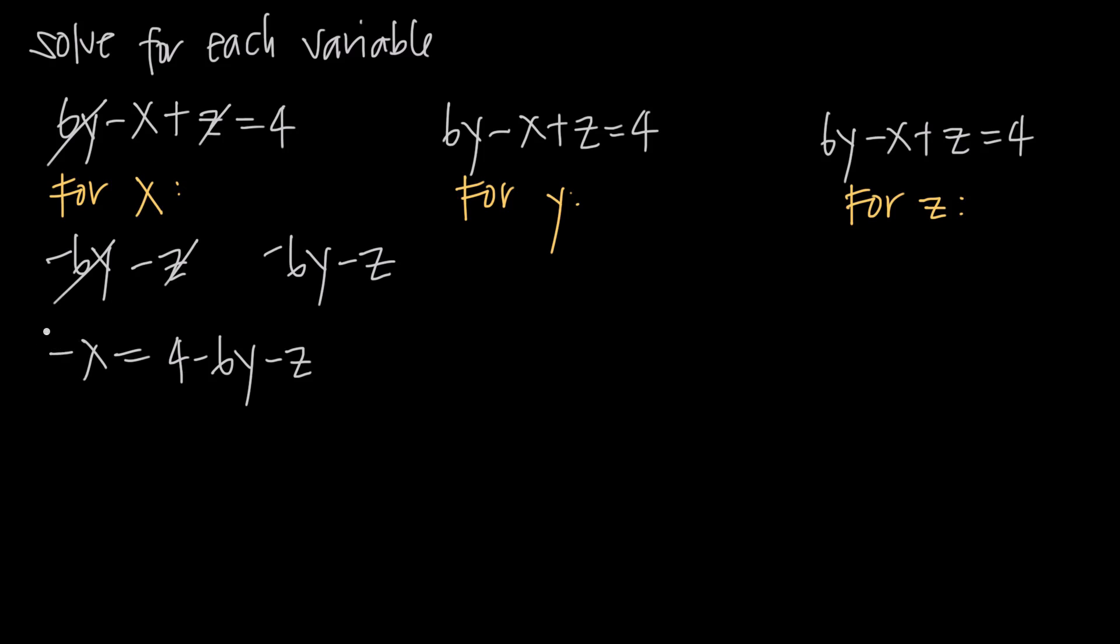So that means we want to multiply both sides of the equation by negative 1. When we do that, we'll get negative 1 times a negative x. Those negative signs will cancel, leaving us with just x. And then on the right, multiplying negative 1 by all three of these terms: 4, negative 6y, and negative z.